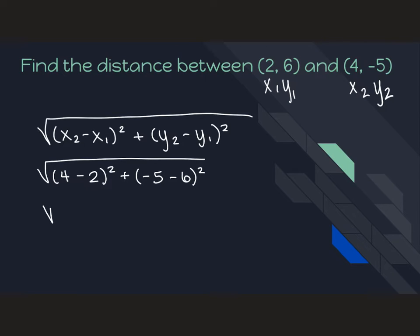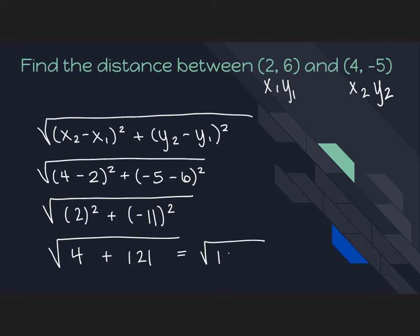Then I want to simplify. 4 minus 2 is 2. Negative 5 minus 6 is negative 11. 2 squared is 4. Negative 11 squared is 121. And when I add those two together, I get square root of 125.